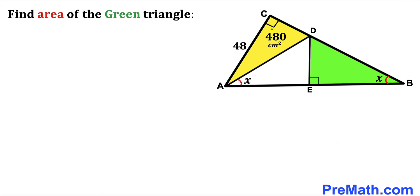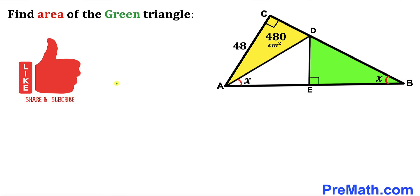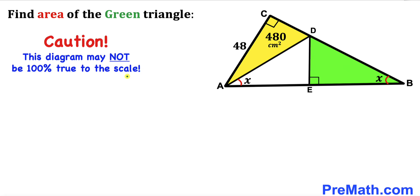The area of this yellow triangle is 480 cm² and this side length AC is 48 cm. Moreover, angle EAD is congruent to angle D and both are represented by angle X. Furthermore, this angle is 90 degrees and likewise this other angle is 90 degrees as well. Our task is to calculate the area of this green shaded triangle. Please note that this figure may not be 100% true to scale.